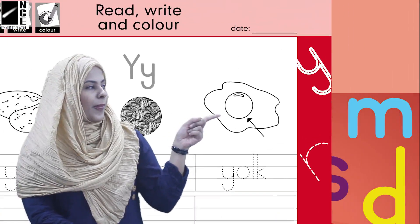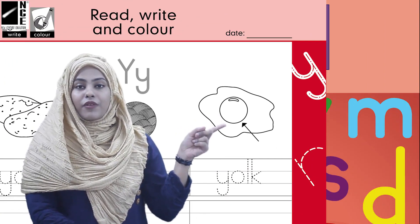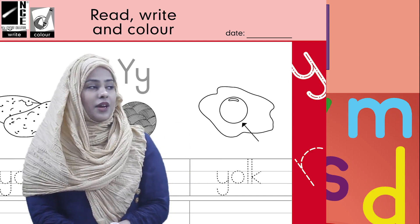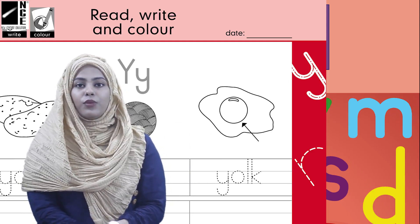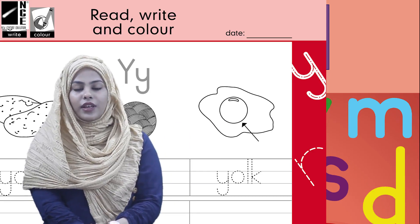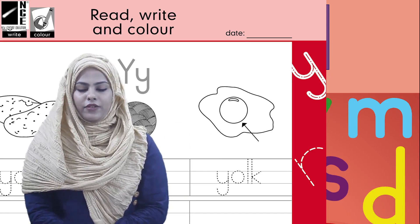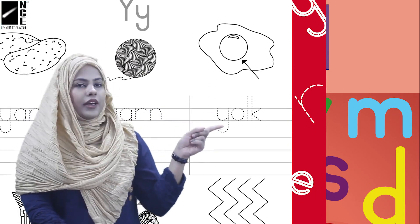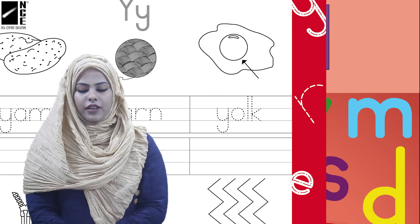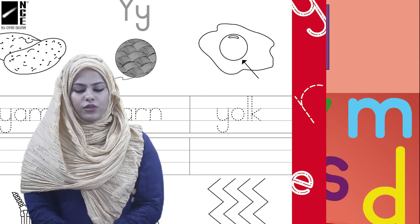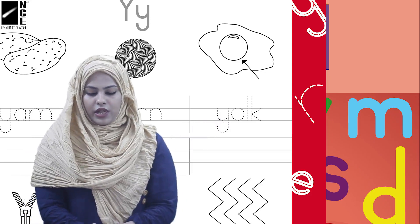Now move on to the next picture, which is a yolk. Ye kya bana hua hai? You eat this at breakfast, right? Look where the arrow is pointing — there's a yellow part. That yellow part is called a yolk — yeh yellow color ki hoti hai. The spelling is Y-O-L-K. Yolk. We will trace the word and then write it down.